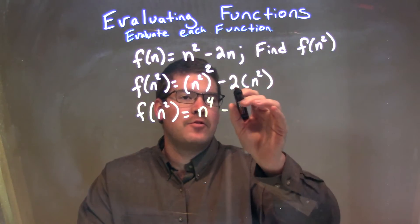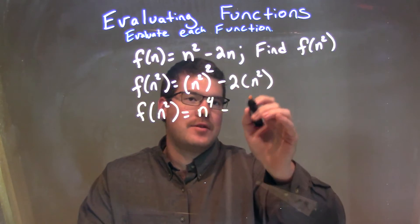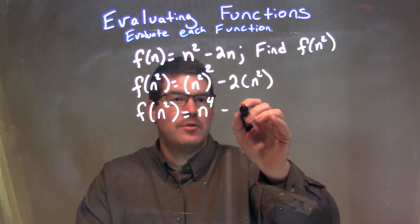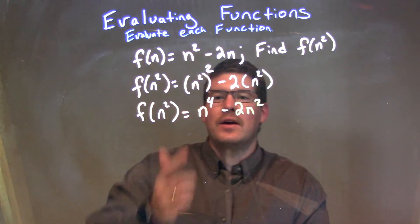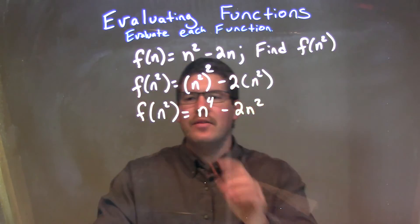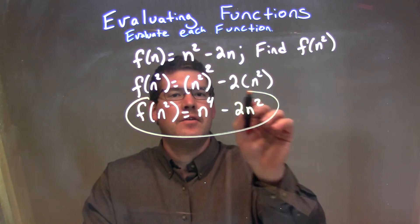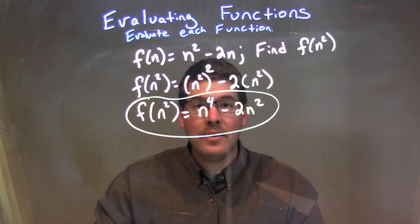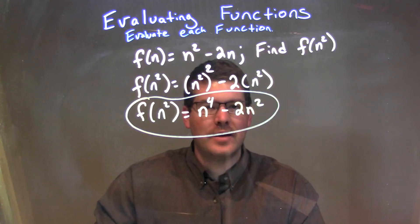minus, and we distribute—multiply negative 2 times n squared, which is just negative 2n squared. And since we have no like terms that we can combine, this is our final answer: f of n squared is equal to n to the fourth minus 2n squared.